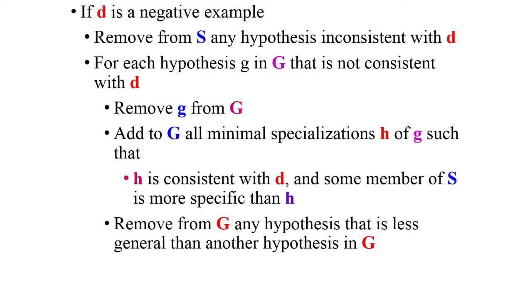If the training example is negative, remove from S any hypotheses inconsistent with d. For each hypothesis g in G that is not consistent with d, remove it from G. Add to G all minimal specializations h of g such that h is consistent with d and some member of S is more specific than h. Remove from G any hypothesis less general than another hypothesis in G.